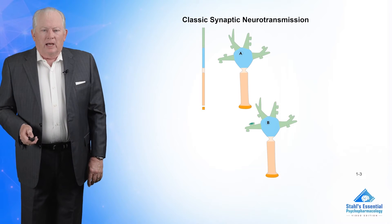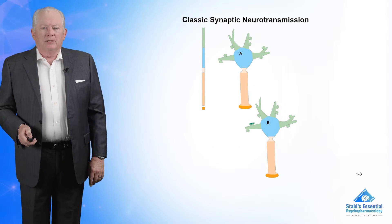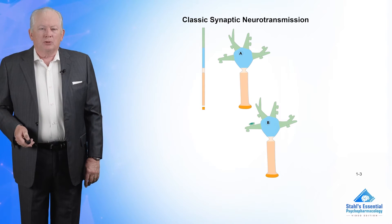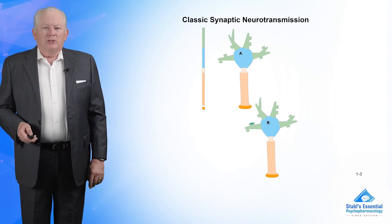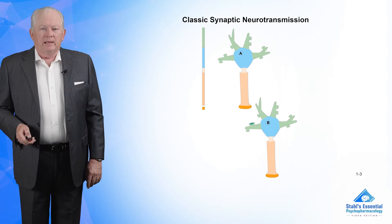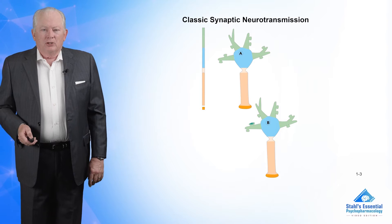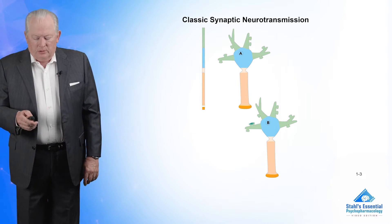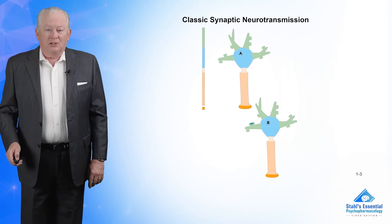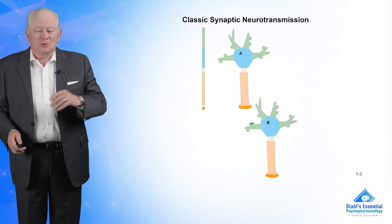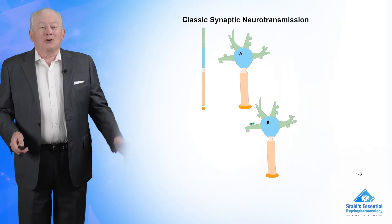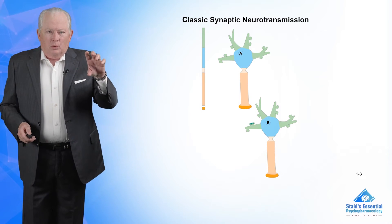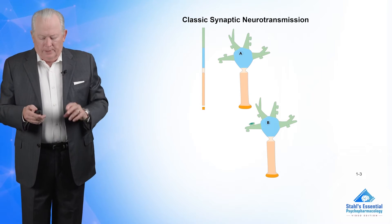Sometimes those little diagrams make you think that it's the presynaptic neuron talking only to the postsynaptic neuron, and that's not really the whole story. In many ways you're having the genome of A, the top neuron, talking to the genome of B. That's really where all the information is — the command headquarters of the neuron. So you really are having the first neuron wanting to talk to the second neuron, command center to command center.